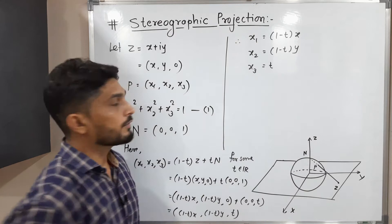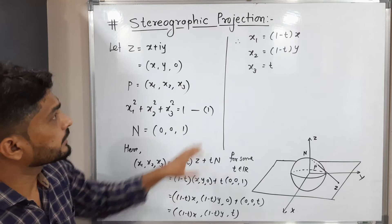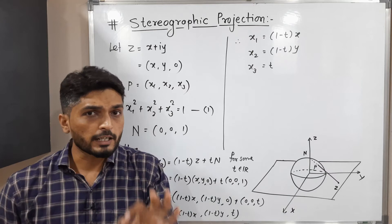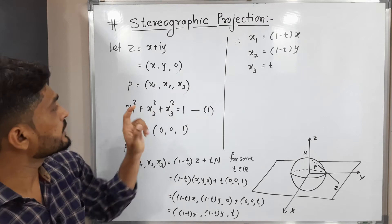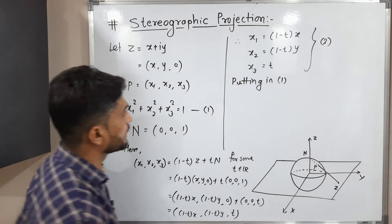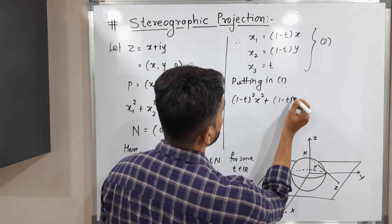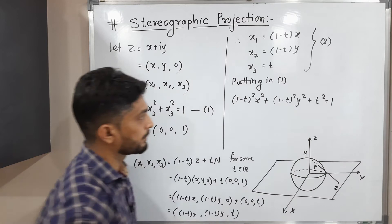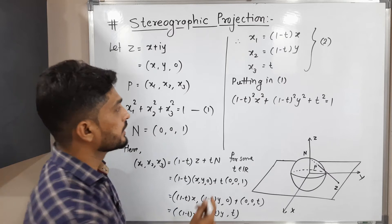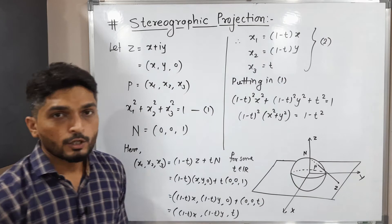Our target is to find the value of t, which we will substitute back to get x₁, x₂, x₃ — our point P. To do this, we substitute all these values into equation number one. Substituting: x₁² = (1−t)²x², x₂² = (1−t)²y², x₃² = t². So (1−t)²x² + (1−t)²y² + t² = 1. Taking (1−t)² common from the first two terms: (1−t)²(x² + y²) + t² = 1, which gives (1−t)²(x² + y²) = 1 − t².